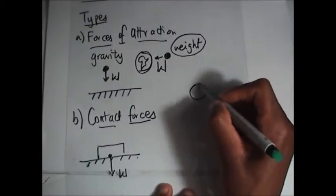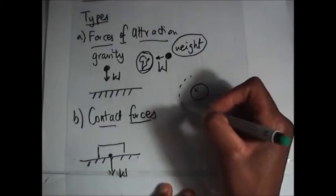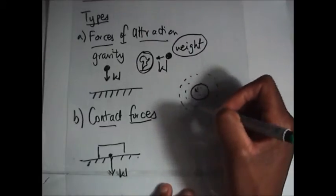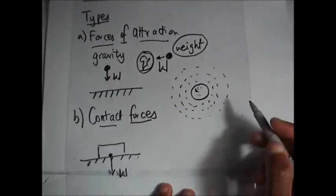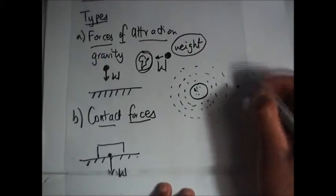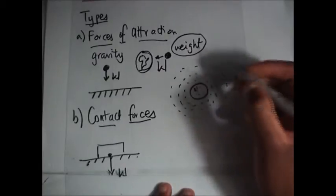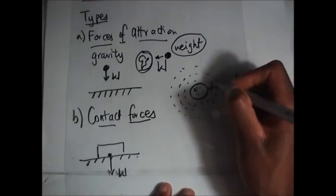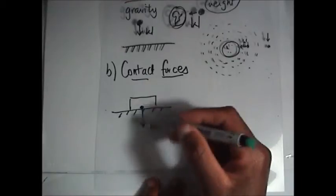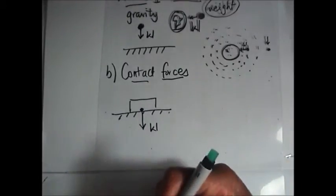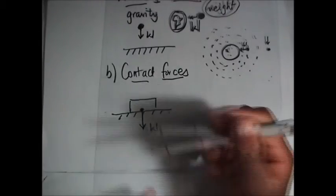Let's say this is the moon. It will have a gravitational field. When you're outside that gravitational field, you will not experience weight. But when you're inside the gravitational field, you experience weight. So this book on top of a table automatically experiences weight because it is inside the gravitational field of Earth.